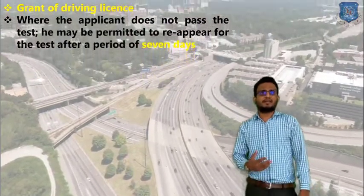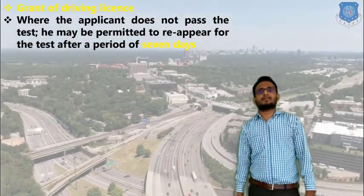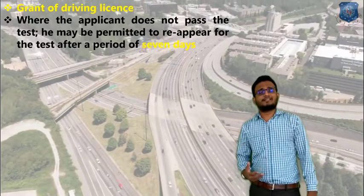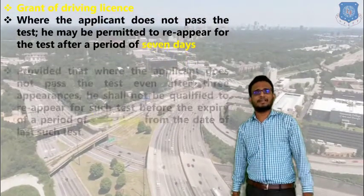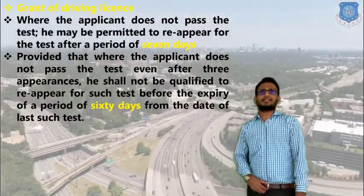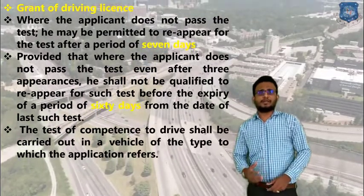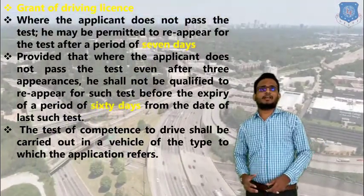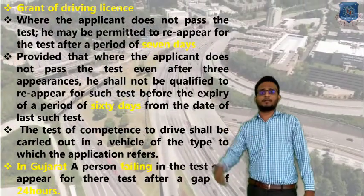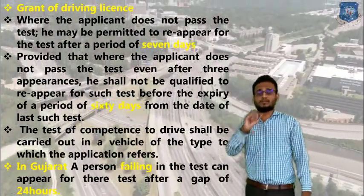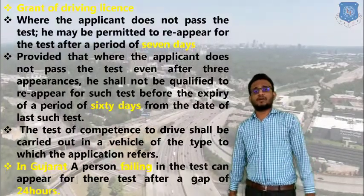Regarding grant of driving license: whenever an applicant does not pass the test, he or she may be permitted to re-appear after 7 days. The expiry date for such a license application is 60 days. The driving test shall be carried out in the vehicle class for which the application is made. Special provision in Gujarat: a person failing the test can appear again after a gap of only 24 hours.